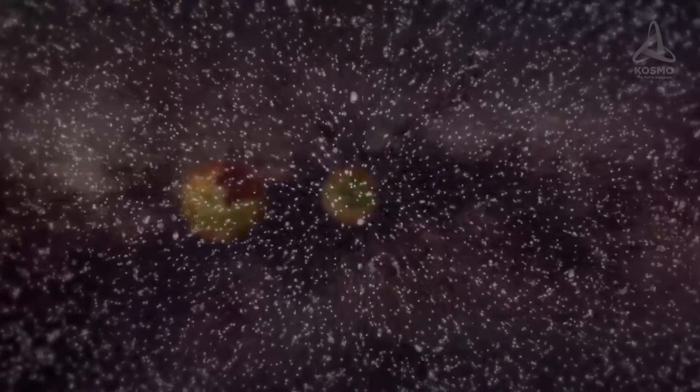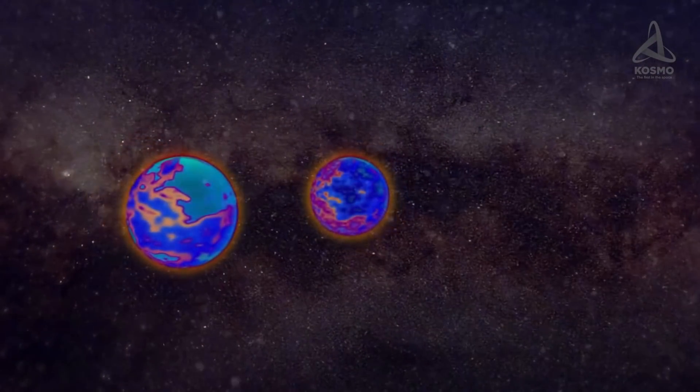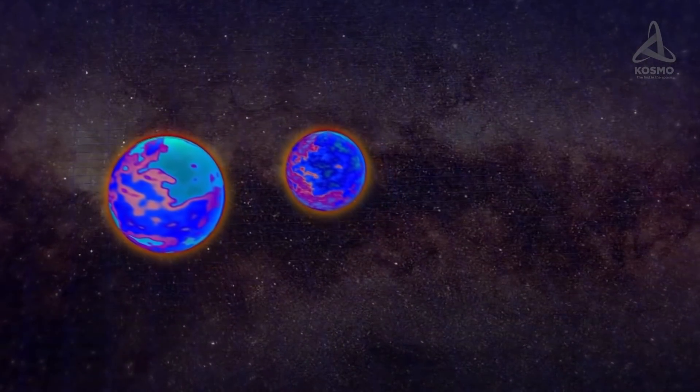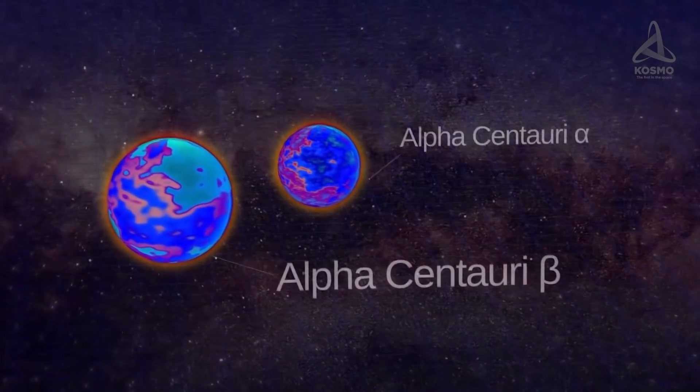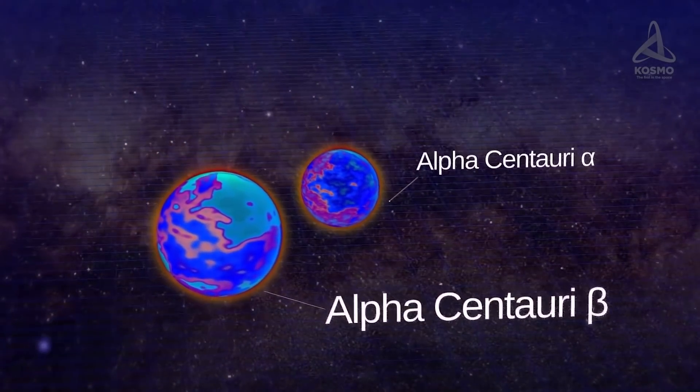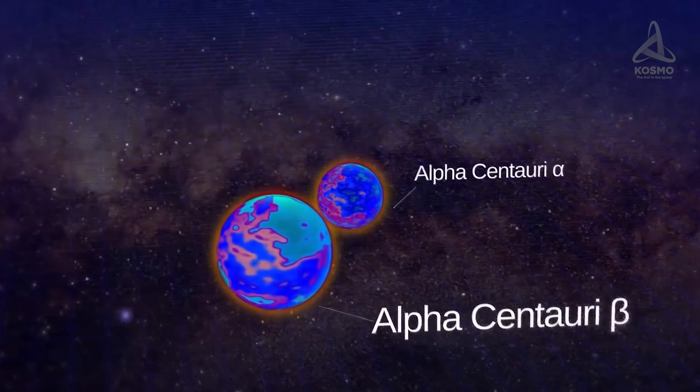Alpha Centauri A is one and a half times brighter than the Sun and their surface temperature is almost identical. In contrast, Alpha Centauri B is two times weaker than the Sun and about 500 degrees colder.